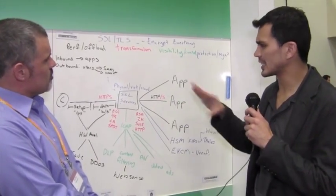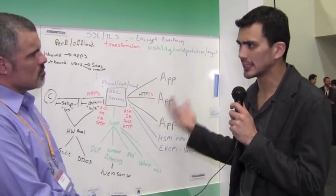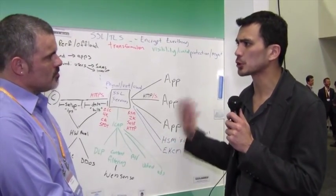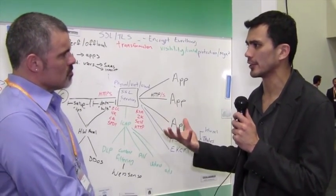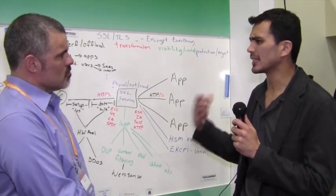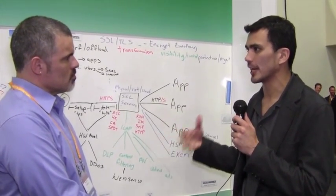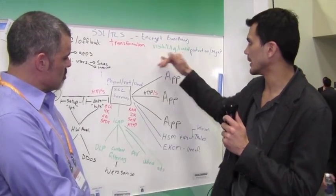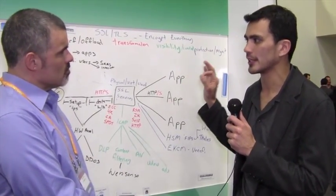You know, this doesn't come at a free cost, because our IT departments have really become used to being able to control the traffic that's coming in and out of their networks. And so, SSL really creates a blind spot for your IT staff. And so, F5 provides you the visibility and control into that encrypted traffic.